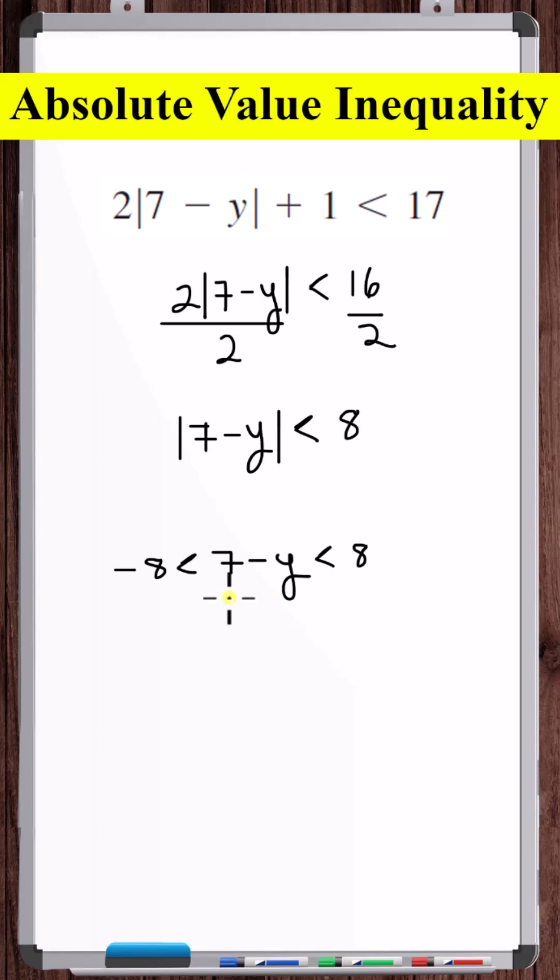Now let's subtract 7 from all sides of this inequality. Minus 8 minus 7 is minus 15. 8 minus 7 is 1.